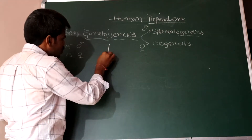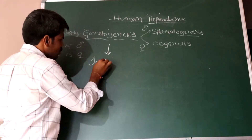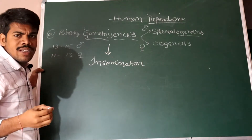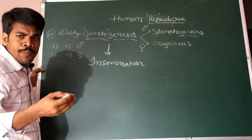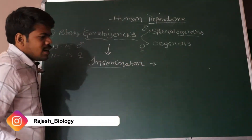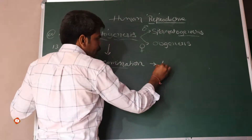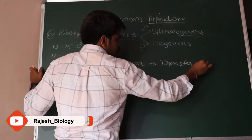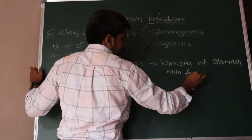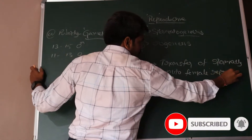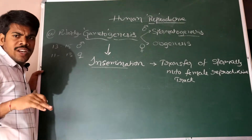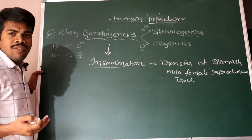Once the gametes are produced at the age of puberty, the next step of the reproductive system is insemination. Insemination means sending the sperm cells into the female reproductive tract. After insemination, the sperm cells actively swim within the female reproductive tract.